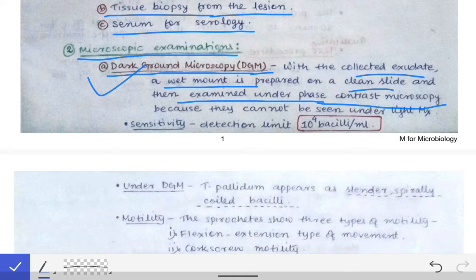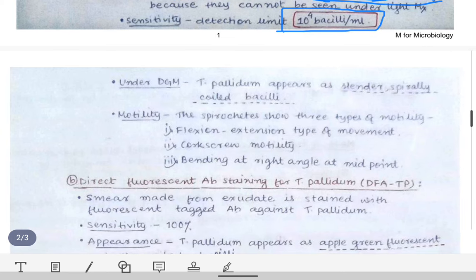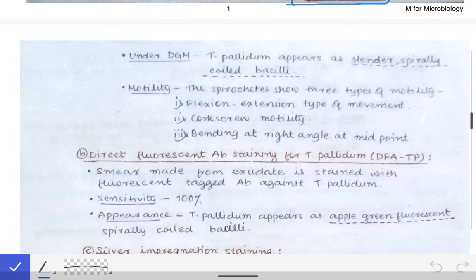The sensitivity of dark ground microscopy is 10⁴ bacilli per ml, meaning if the number of bacilli in 1 ml of exudate is more than 10⁴, we can detect Treponema pallidum; if less than 10³ per ml, we will not be able to see it. Under DGM, Treponema pallidum appears as slender and spirally coiled bacilli.